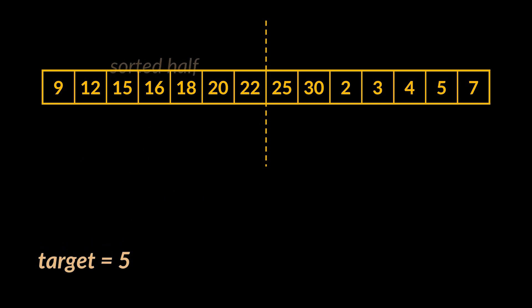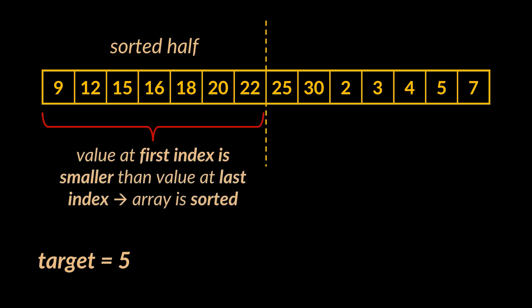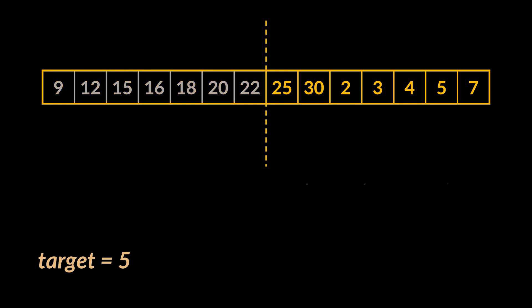Let's go through an example and suppose that the target value index we are looking for is 5. So by cutting this array in half, we made sure 100% that one of these sub arrays is sorted. And if we manage to identify which one of these sub arrays is sorted, then we can apply binary search on that sub array.